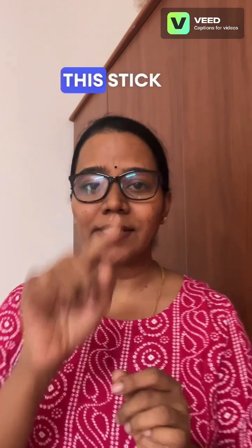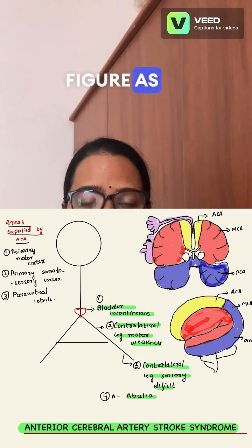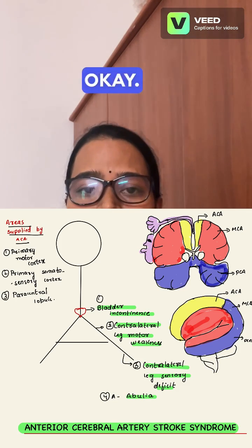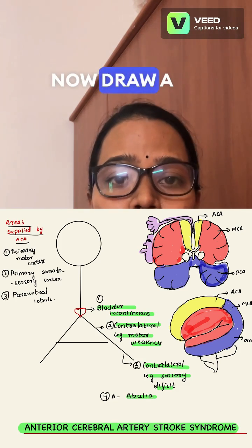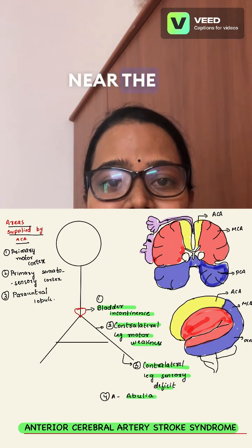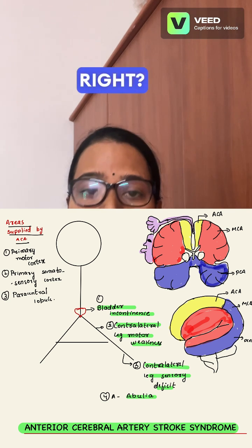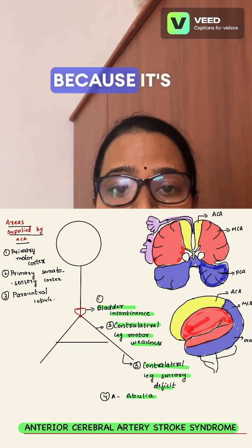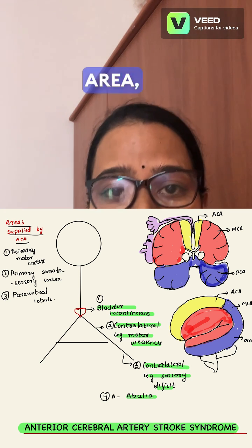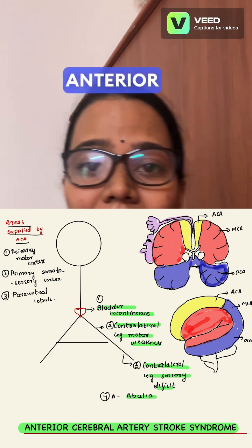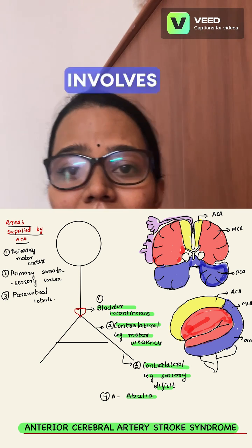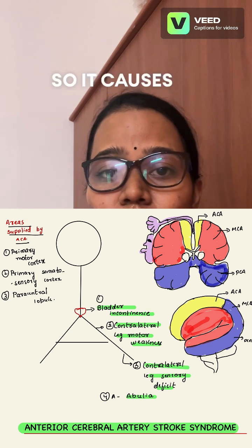Draw this stick figure as shown. Now draw 'A' near the legs. 'A' stands for Anterior Cerebral Artery. Because it is in the leg area, you know that the Anterior Cerebral Artery involves the legs.